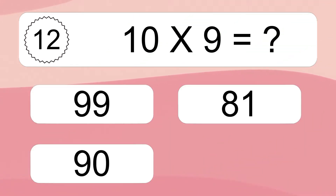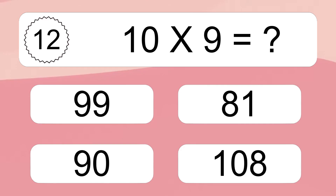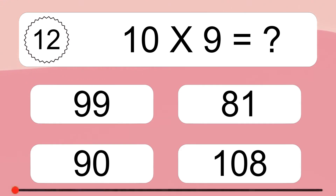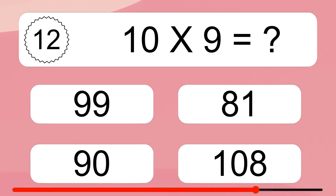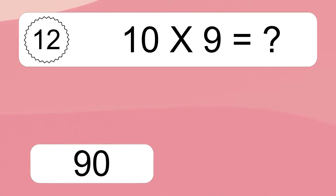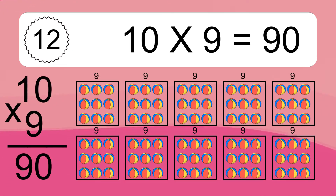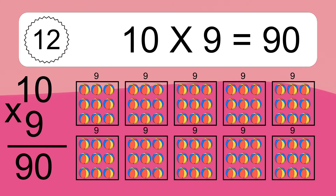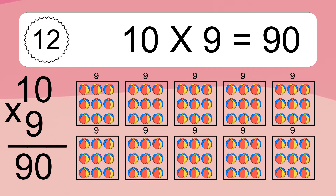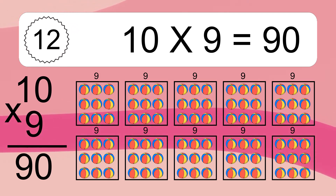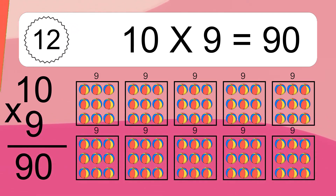Ten times nine equals what? Ten times nine equals ninety. We have ten boxes, and each box has nine colorful balls inside. If you count all the balls in all the boxes together, you will have ten times nine balls. This equals ninety balls.